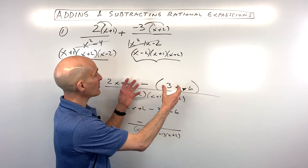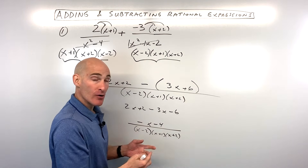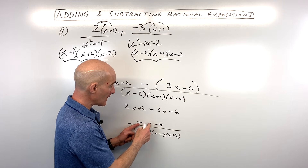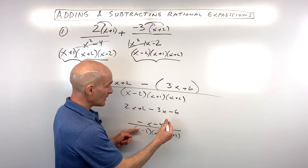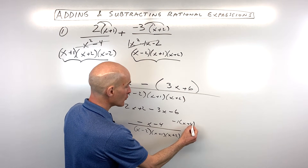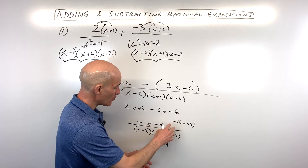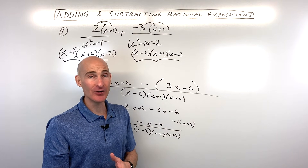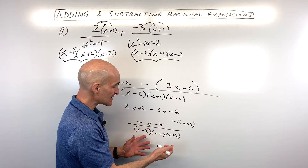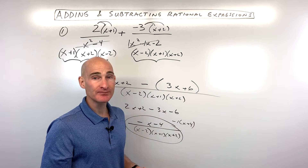Sometimes when you combine into one fraction, you can factor the numerator further. In this case, I could factor out a negative 1, giving negative 1 times x plus 4. The reason to do that is because factors in the numerator sometimes cancel with factors in the denominator, allowing further reduction. In this case, that doesn't happen, so this is our final answer.